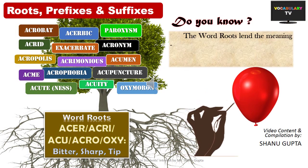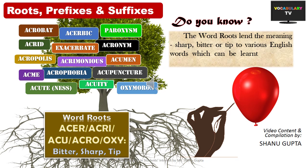Welcome to our 19th video on Word Roots Illustrated. In this video, we are going to cover the Latin and Greek roots starting with AC, all of which lend the meaning sharp, tip, or bitter to various interesting words in English, which can be learnt effectively using this root connection. So, let's begin.